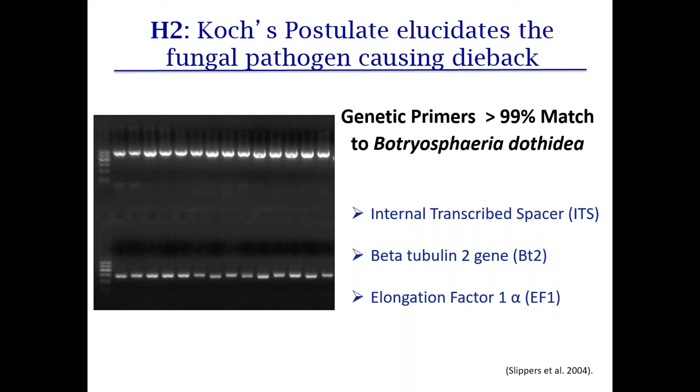Using genetic primers — internal transcribed spacer, beta-tubulin 2 gene, and elongation factor 1-alpha — we found greater than 99% match to the fungus Botryosphaeria dothidea, described as universal in chaparral but not previously described in Malosma laurina until just two weeks ago, published in Plant Disease.